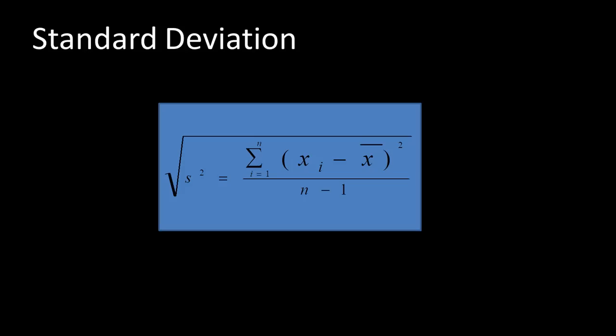That is what is called the standard deviation. The good thing about standard deviation is that its units are the same as the units of the underlying measurements. Continuing our example of annual incomes, standard deviation will have a unit of dollars as well.